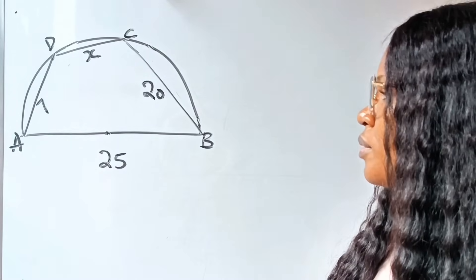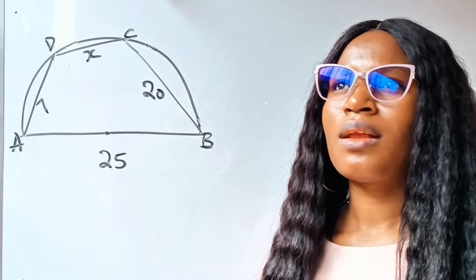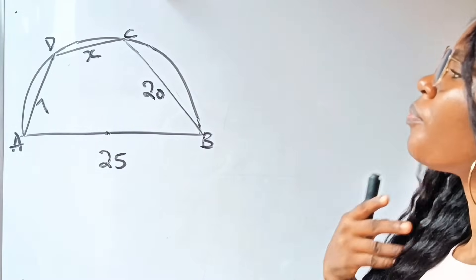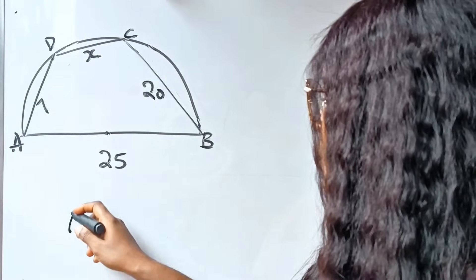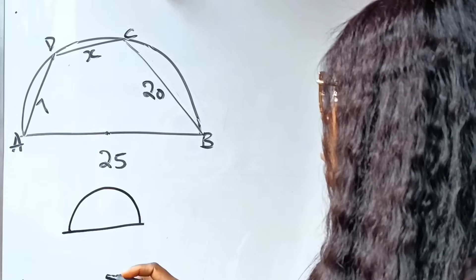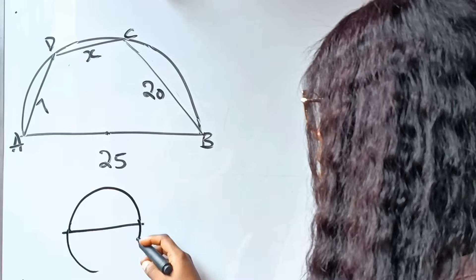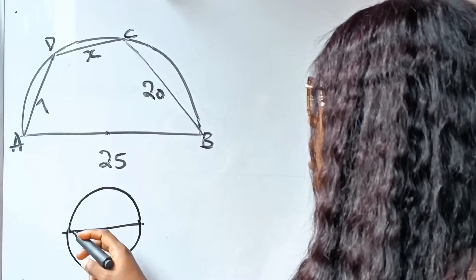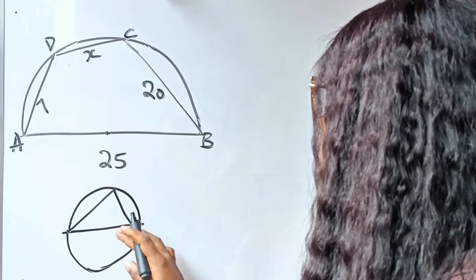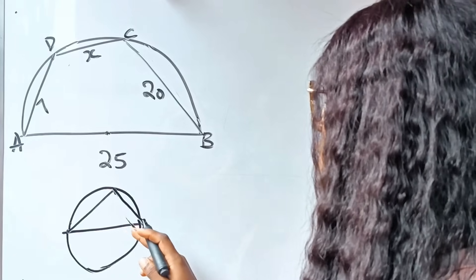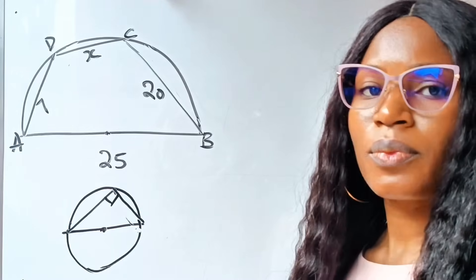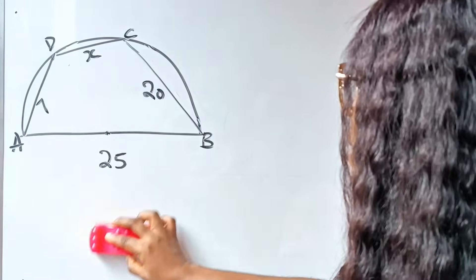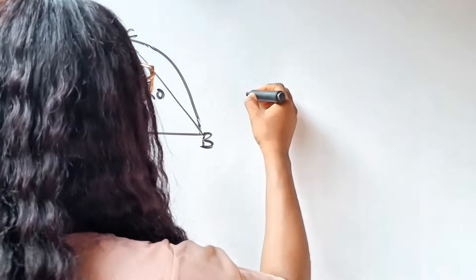First of all, this is a semicircle. Let's bring in a circle theorem. This theorem states that in a circle, the angle in a semicircle is 90 degrees — or the angle subtended by a diameter on the circumference is 90 degrees. Applying that here, permit me to draw another diagram.